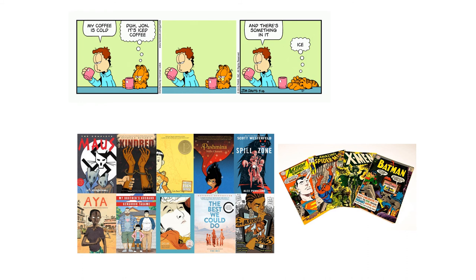When we say comics, there's a lot of different things we could be talking about. We could be talking about comic strips, like Garfield — those short sequences of just a few panels, sometimes just a couple of panels, that appear in the comics section of newspapers. Or we could be talking about graphic novels — there on the lower left are several graphic novels, including Kindred, which is one that we read in this class, and Maus.